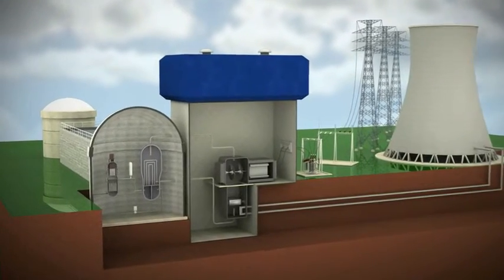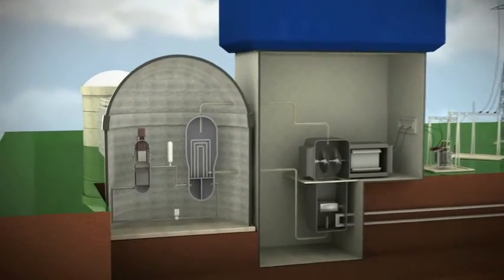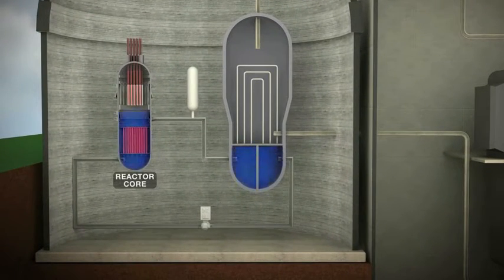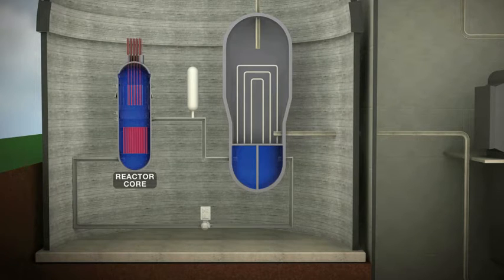The process of creating electricity using nuclear power begins with a splitting of uranium atoms in the reactor. This process, called fission, produces heat.